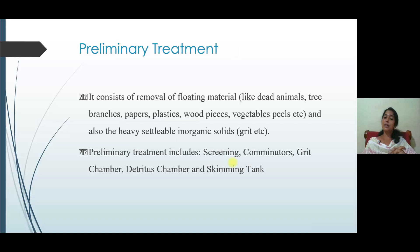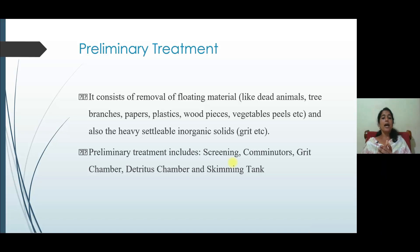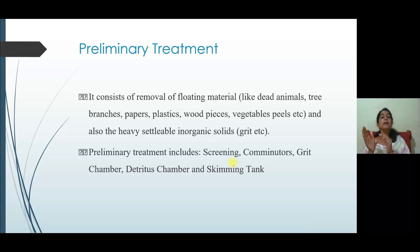Preliminary treatment consists of removal of floating material like dead animals, tree branches, papers, plastics, wood pieces, vegetable peels, and heavy inorganic solids like grits. The preliminary treatment methods include screening, comminitors, grit chamber, detritus chamber, and skimming tank — these are the steps taken in the preliminary treatment of wastewater.